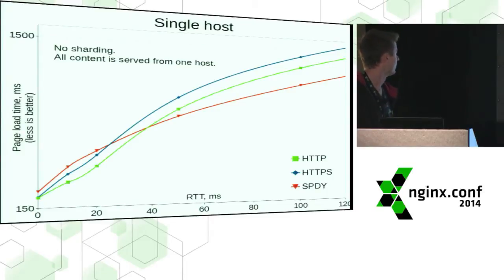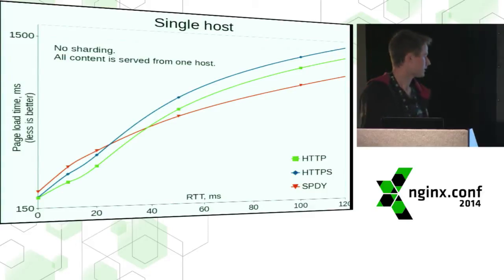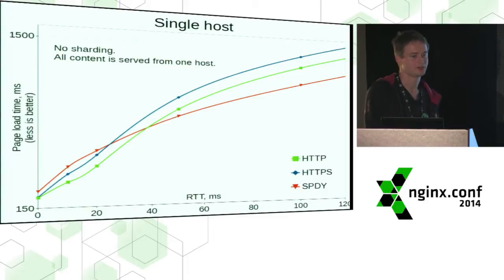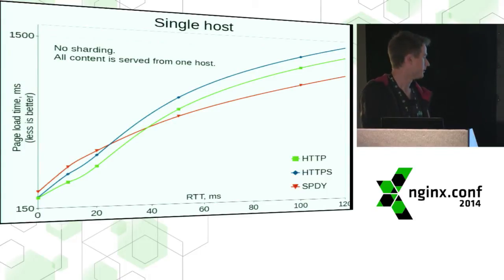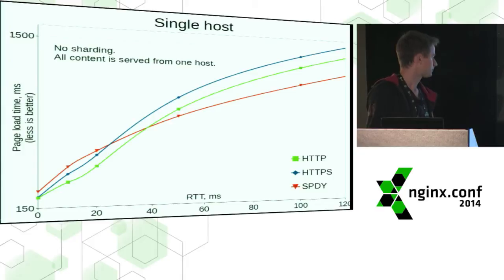That's what I see when I benchmark this page. As you can see, on low latency networks you will not benefit from SPDY — it may even be slightly slower. You will see some slowdown because multiple connections also have multiple TCP windows and circuit buffers, and when RTT time is really low, more window sizes and buffers push performance up. But when RTT times start to be significant, SPDY easily overcomes HTTP and HTTPS.